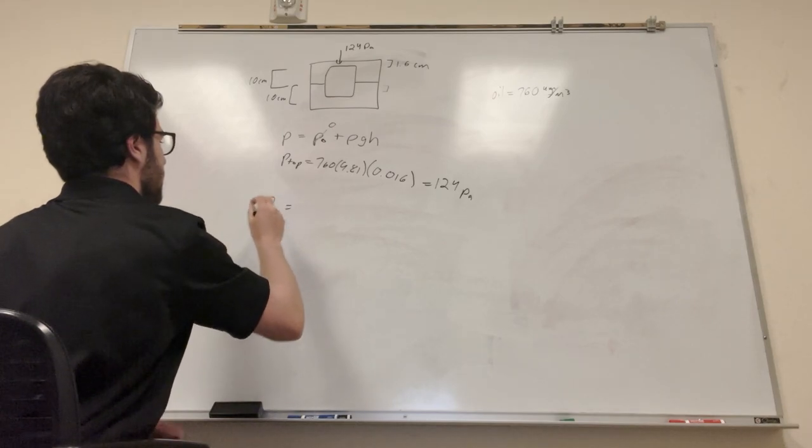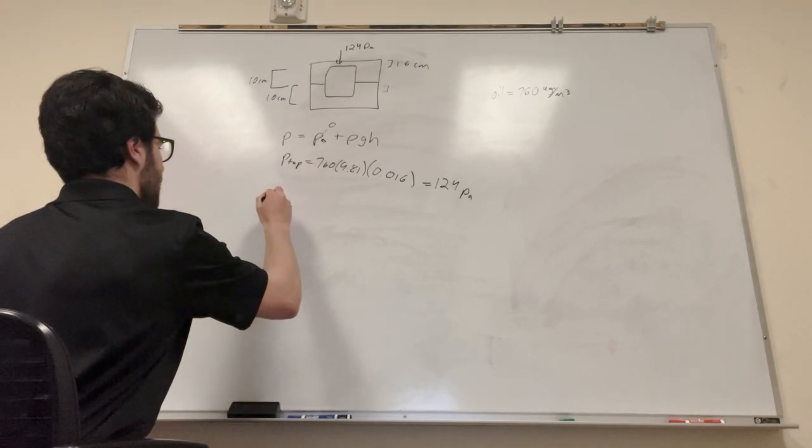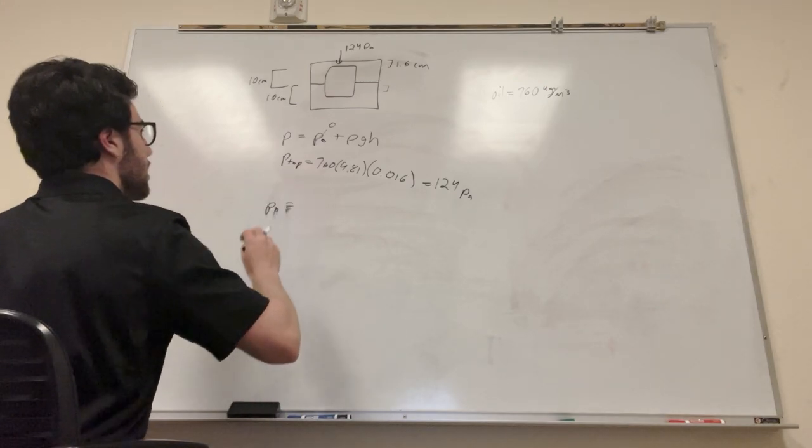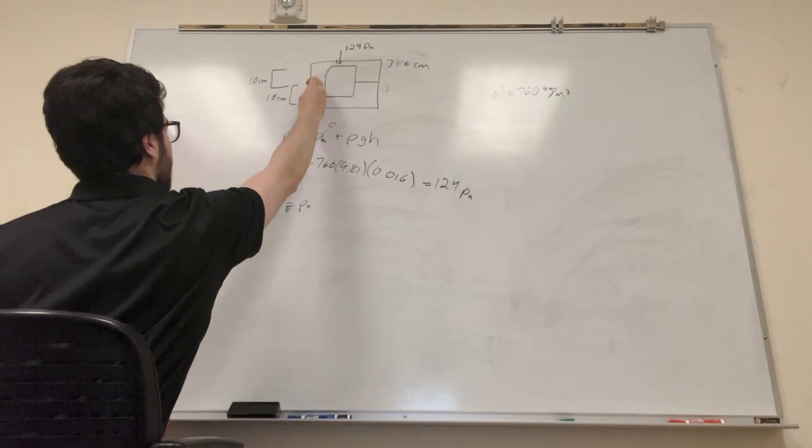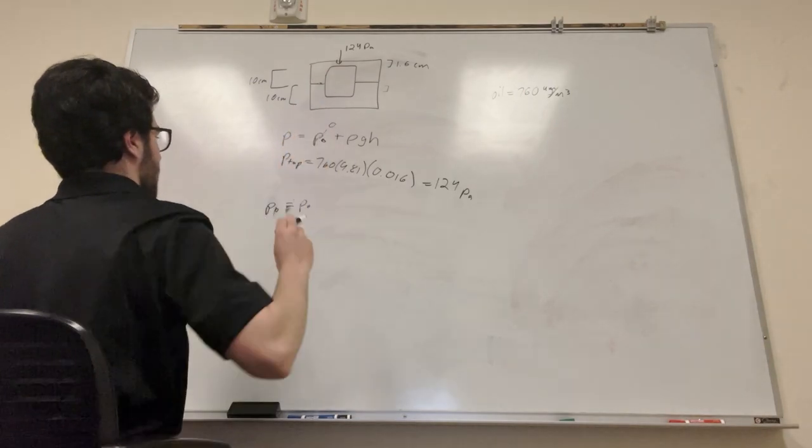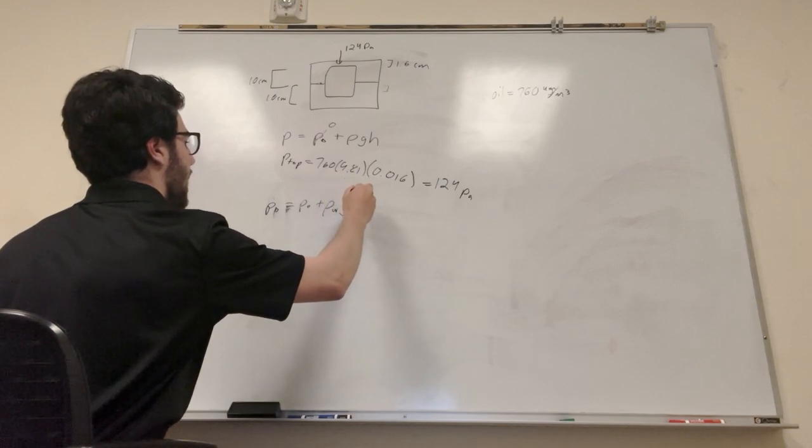So pressure at the bottom, I'm gonna make that better, is equal to, okay, so we're gonna have P-naught, which is gonna be the pressure at this point right here, where the intersection is, plus the density of water, times the gravity, times the height of the water.